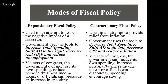There are two modes of fiscal policy. Expansionary fiscal policy is used in an attempt to lessen the negative impact of a recession. That second scenario where we had evidence the economy was not going to self-regulate would require expansionary fiscal policy. The government would try to use the tools to increase total spending, shift the AD curve to the right, increase real GDP, and reduce unemployment. Through acts of Congress, the government can increase its own spending, reduce personal and business income taxes, or officials can persuade an increase in spending. It's typically a mixture of these items, but if effective and timely, we could see a desirable result.